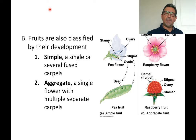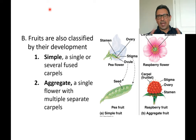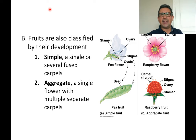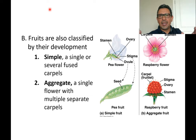Based on development, simple fruits are those that develop from a single flower, or from several carpels within the same flower that fuse together. Examples of simple fruits include a peach, a nectarine, and a grape.